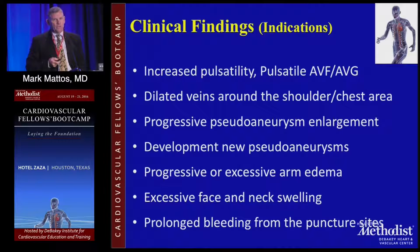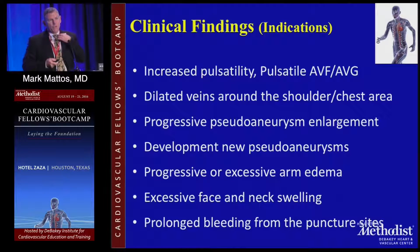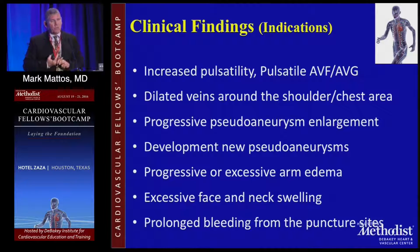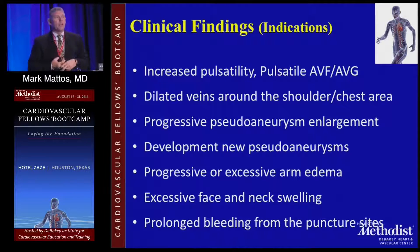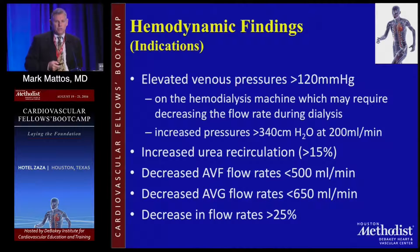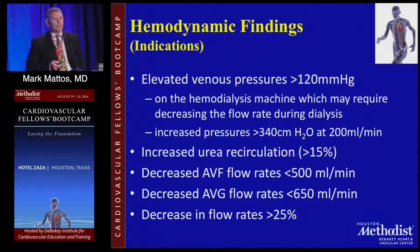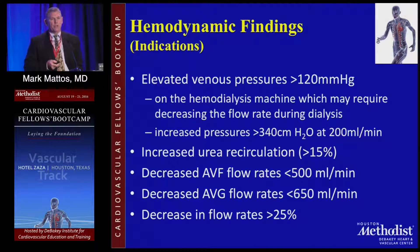Clinical findings to look for: increased pulsatility in AVF and AVG; dilated veins around the chest signifying central stenosis or obstruction; a pseudoaneurysm getting larger means outflow obstruction; new pseudoaneurysm in the fistula or graft means central obstruction; progressive arm edema indicates central obstruction; excessive face and neck swelling indicates central obstruction; prolonged bleeding from puncture sites also indicates central obstruction. Fistula flow should be 20-30% higher than dialysis blood flow rates of 300-500 mL/min, so actual graft or fistula flow should be 700-1,000 mL/min.